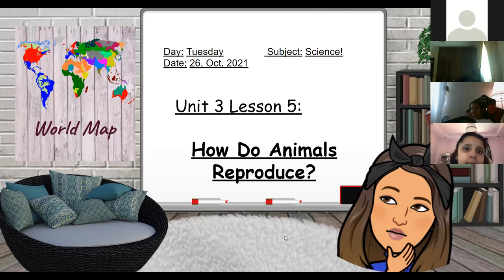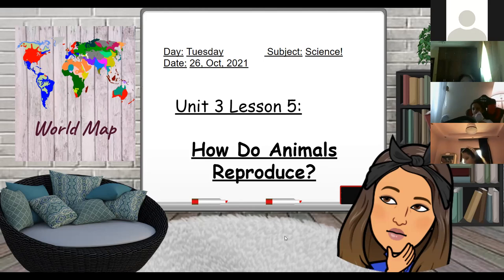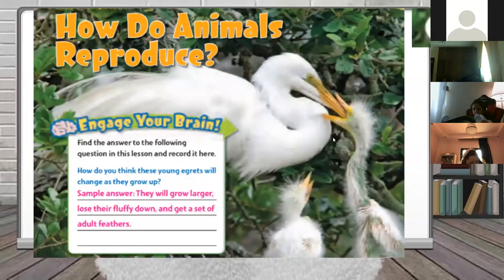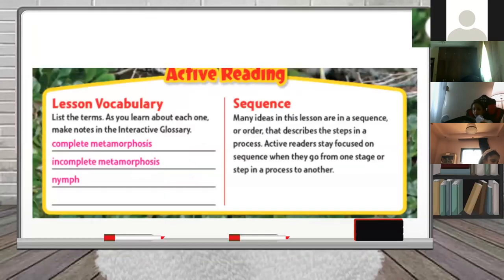A student observes: every furry animal is a mammal? Not every furry animal, but yes. Is a cat a mammal? Like animals that have a lot of fur? Yes, that's right - they are mammals. Excellent! Most animals that have fur - like a bear, a cat, a dog - yes, that's right. Excellent. In this lesson we are going to learn these vocabularies: complete metamorphosis, incomplete metamorphosis, and nymph. Are you familiar with any of these words?